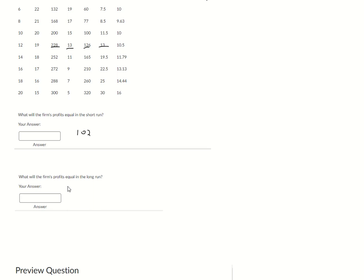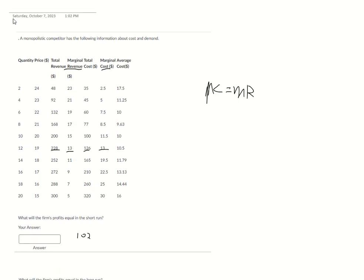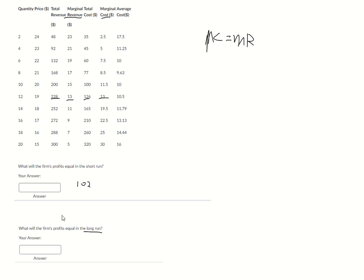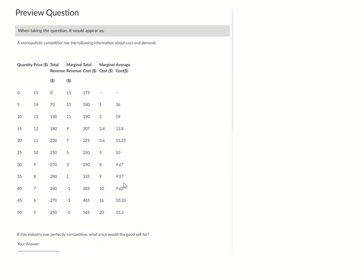Now I may also ask you what is the profit in the long run. Whenever you hear profit in the long run for monopolistic competition, you don't even have to read the table anymore, because by definition for companies in monopolistic competition, their profit in the long run is always zero. That's a trick question. Let's look at another one.